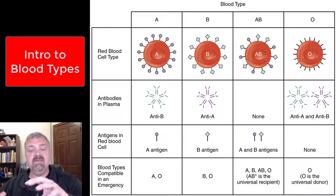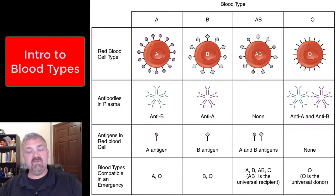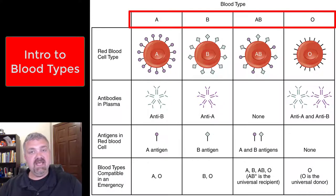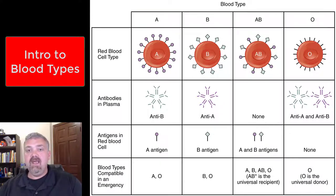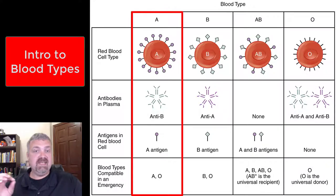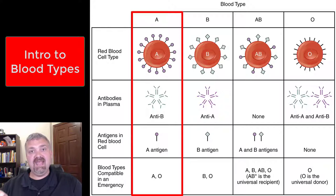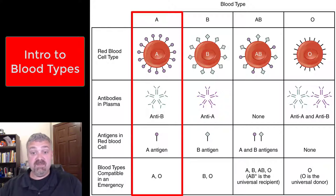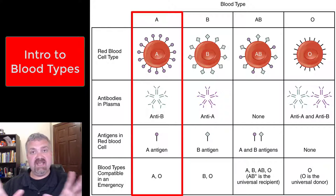With the ABO system, you can be one of four different blood types: A, B, AB, or O. If you have type A blood, that means you're going to have the A antigens on the surface of your red blood cells and you're going to have the anti-B antibodies in your plasma. As you can see from this image here, anti-A and anti-B antibodies are IgMs — that's why they have that cool starburst pentamer shape.